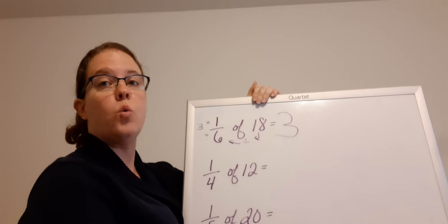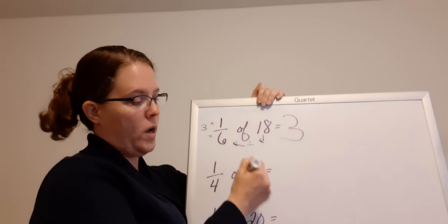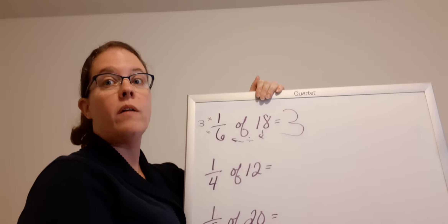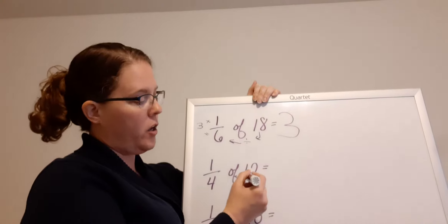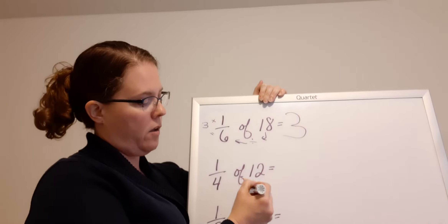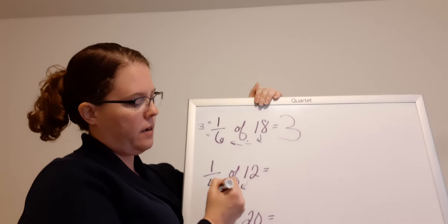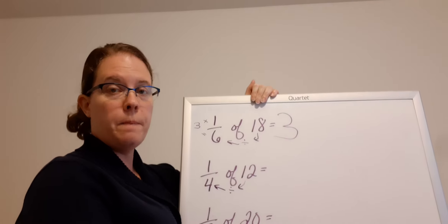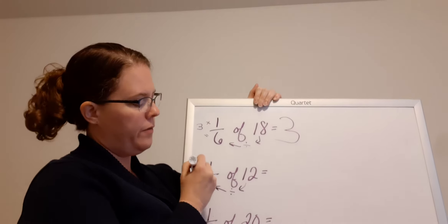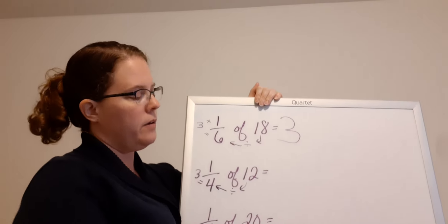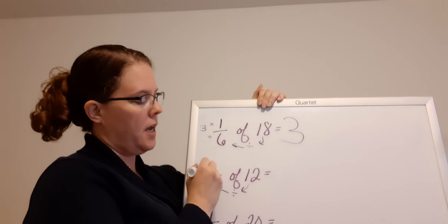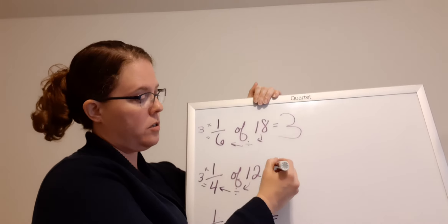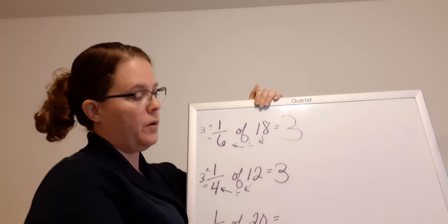1/4 of 12. So if I have 12 things and I want to know how many 1/4 is, I go 12 divided by 4 equals 3. 3 times 1 equals 3.